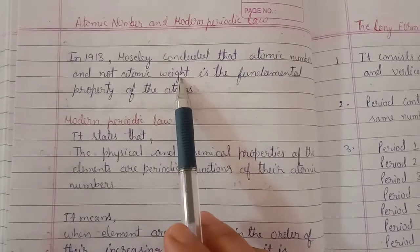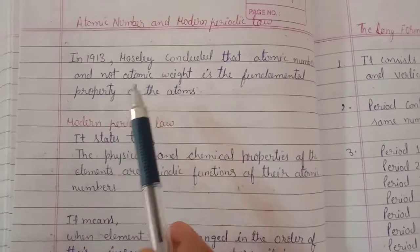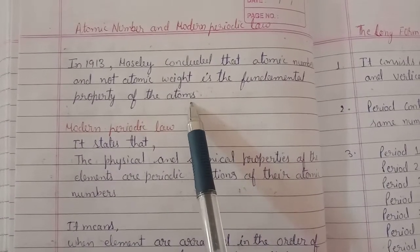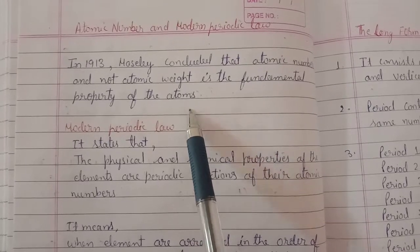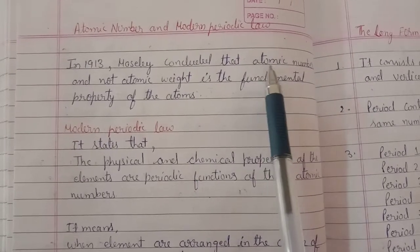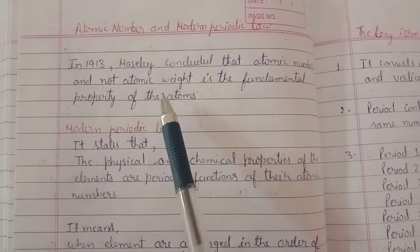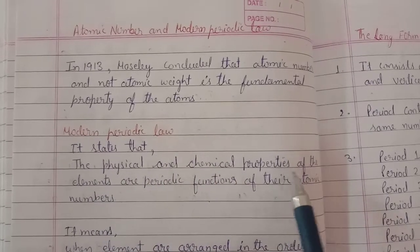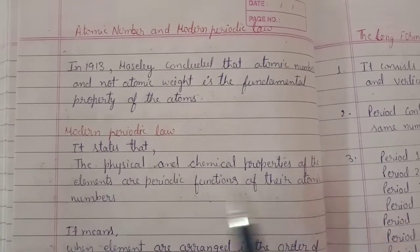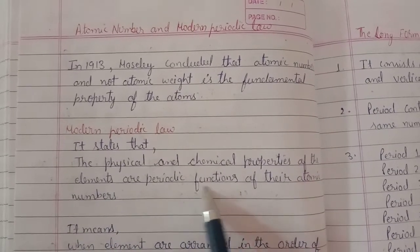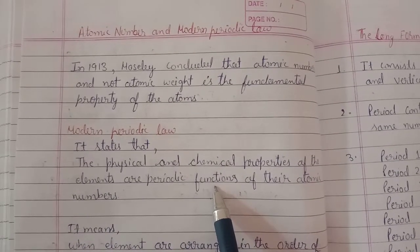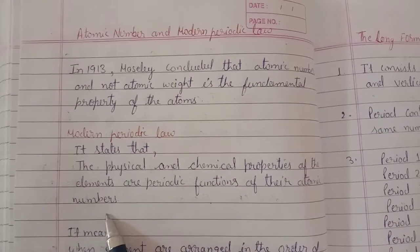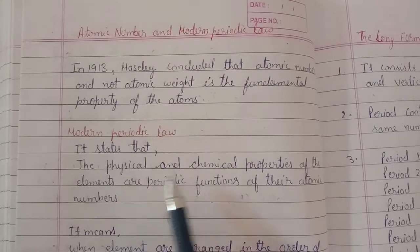Mendeleev had considered atomic mass as the fundamental property, but Moseley proved through his experiment that atomic number is the fundamental property of the atom. This means that the properties of any atom or element depend on its atomic number, not on atomic mass. The modern periodic law states that the physical and chemical properties of elements are periodic functions of their atomic number.